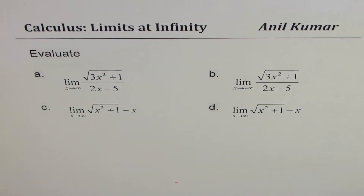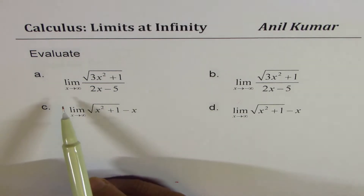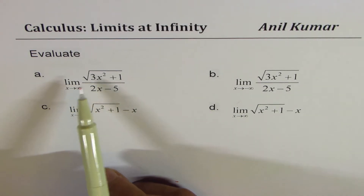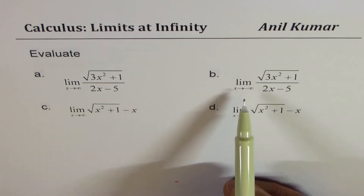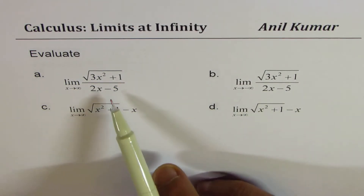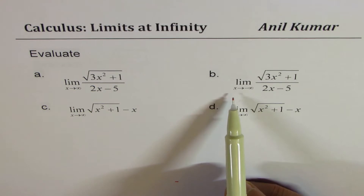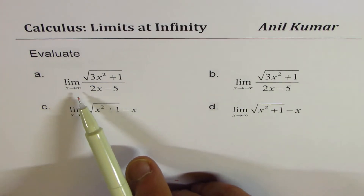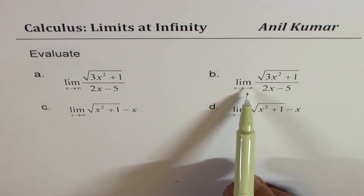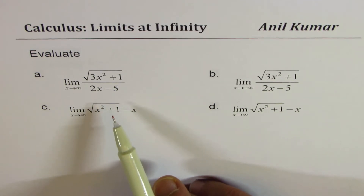I'm Anil Kumar and in this video we'll see how to find limits at infinity. We have four examples. The first is the limit as x approaches infinity for square root of 3x squared plus 1 divided by 2x minus 1. The second is the same function but x approaches minus infinity — positive infinity to the right side, minus infinity towards the extreme left.